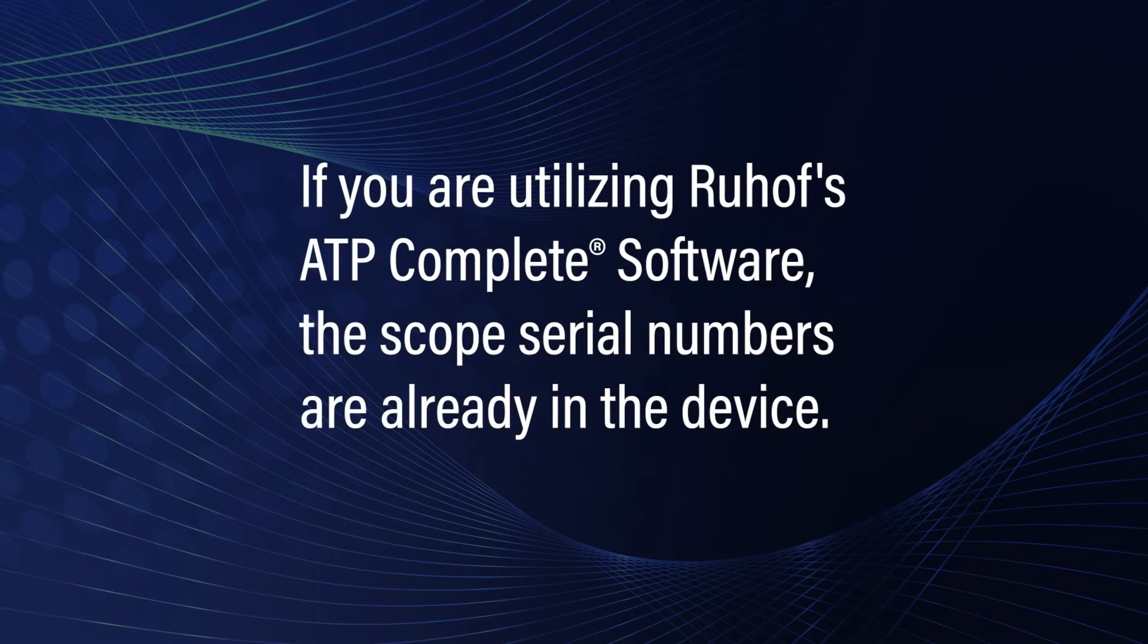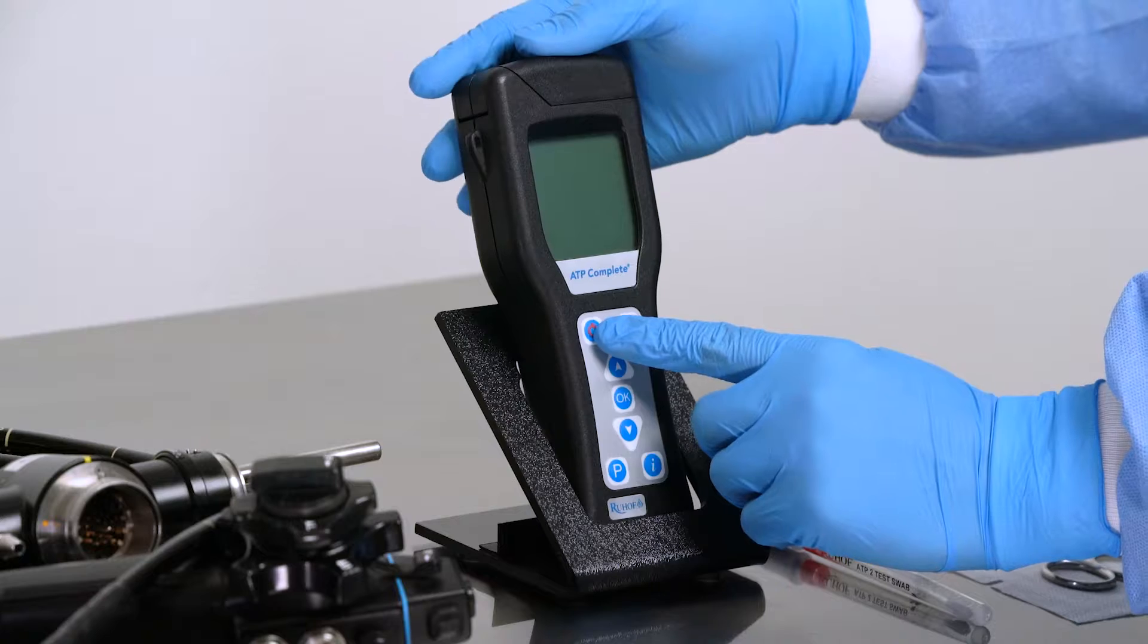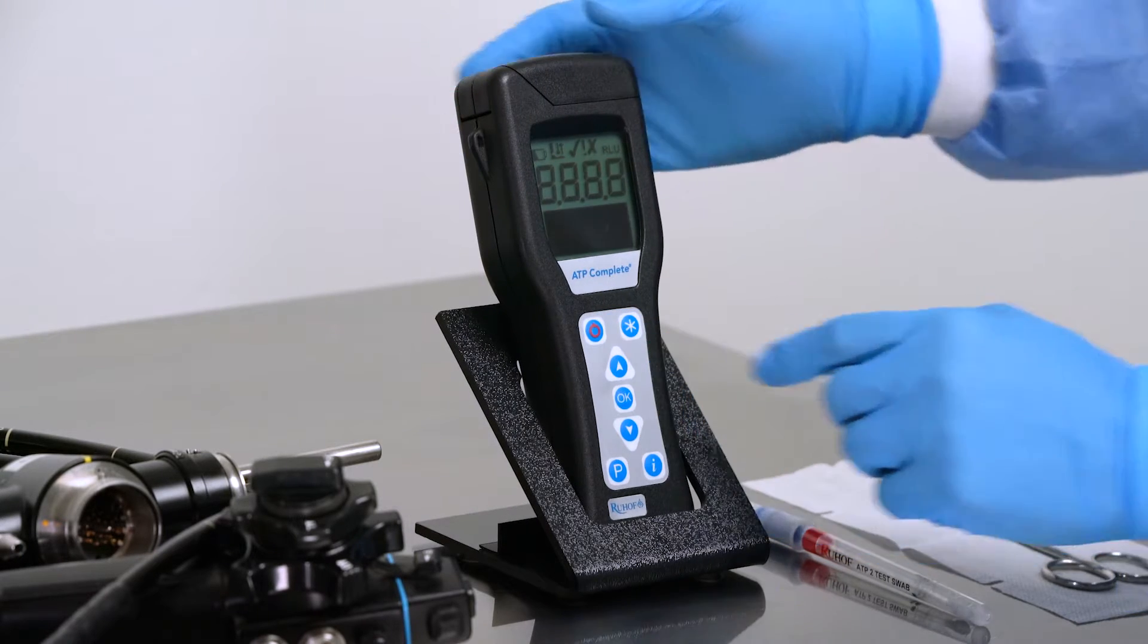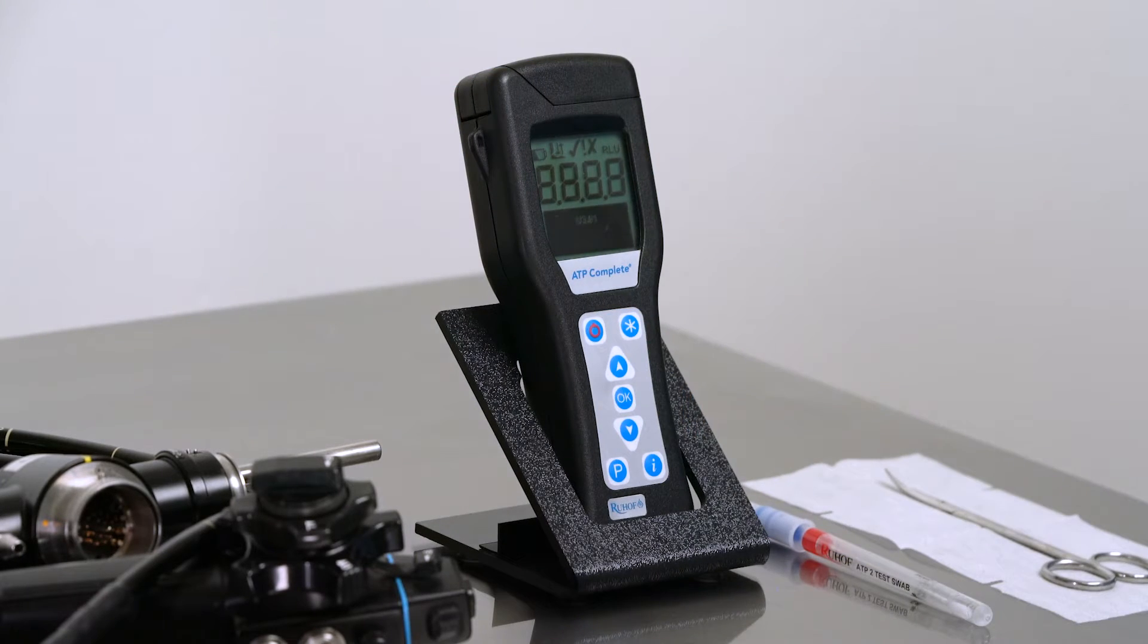If you are utilizing Ruhoff's ATP Complete software, the scope serial numbers are already in the device. When the device is turned on, it will conduct a 15-second self-calibration sequence to ensure it is functioning properly.